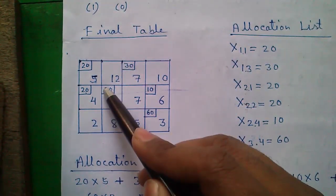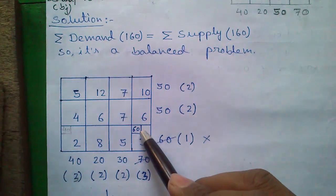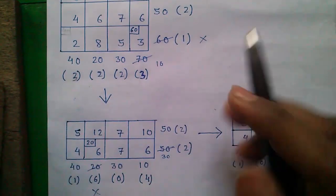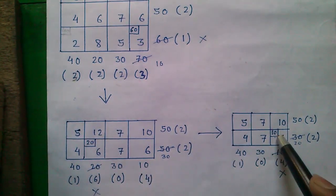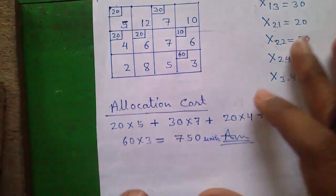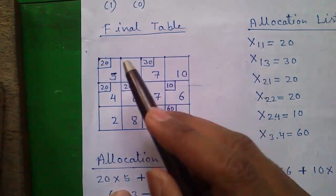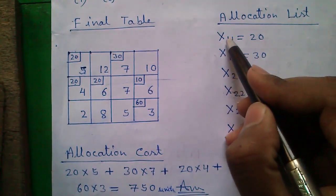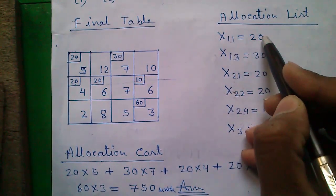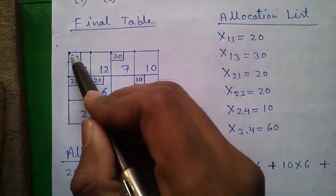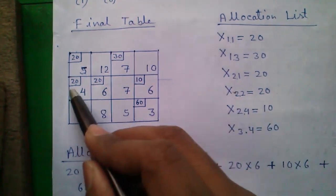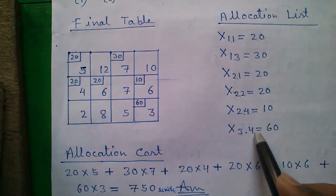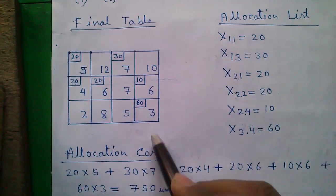Next, find the final table — it's simply writing all the allocation values in a single table. We allocated 60 at the cell with cost 3, 20 at the cell with cost 6, and 10 at another cell with cost 6. The allocation list is as follows: position (1,1) = 20, meaning row 1, column 1 we allocated 20; position (2,2) = 20, meaning row 2, column 2 we allocated 20; and position (3,4) = 60, meaning row 3, column 4 we allocated 60.